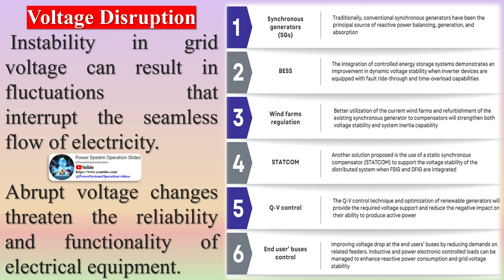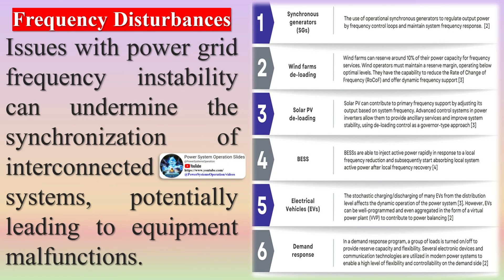The dwindling system inertia, particularly with the incorporation of renewable resources, heightens the risk of more profound frequency deviations and higher rates of frequency change (RoCoF), jeopardizing the stability and performance of the power grid. A significant challenge is the intermittency and variability of renewable generation due to their weather dependency, raising concerns about the reliability and flexibility of a power network.